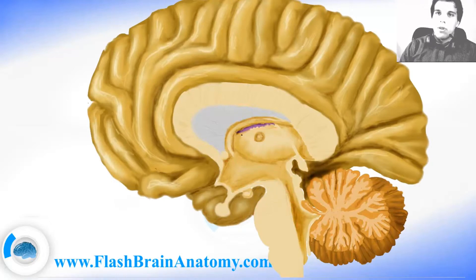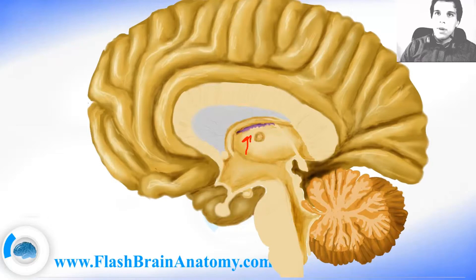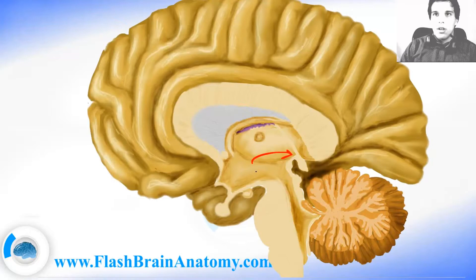The lateral wall of the third ventricle is built up by the thalamus. The roof is made by the telochoroidia, the purple structure here. On the back of the third ventricle we have the pineal gland and the posterior commissure. And it just becomes kind of like a channel, which is called the cerebral aqueduct.